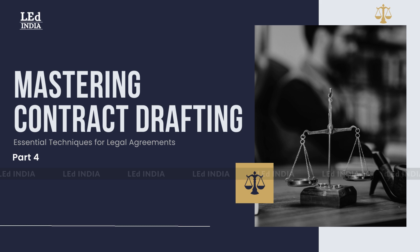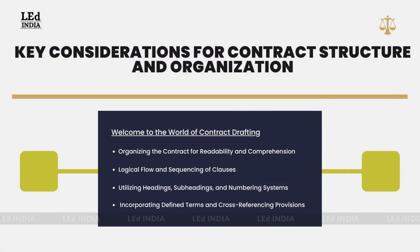Mastering Contract Drafting: Essential Techniques for Legal Agreements. Key Considerations for Contract Structure and Organization. Welcome to the chapter that will guide you through the art of structuring and organizing contracts for maximum readability and comprehension. In this chapter, we will explore key considerations that will help you create well-structured contracts with a logical flow. From utilizing headings and subheadings to incorporating defined terms and cross-referencing provisions, we will cover it all. Let's dive in and discover the secrets to effective contract structure and organization.